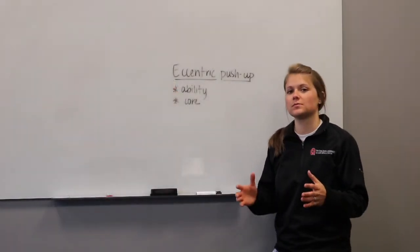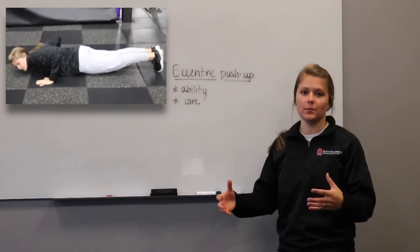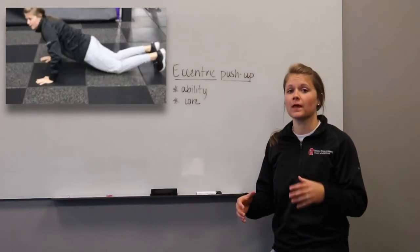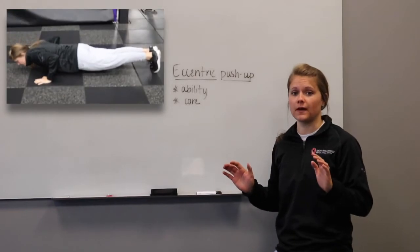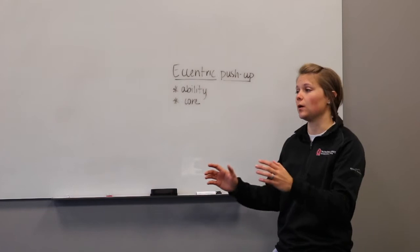With the eccentric push-up, we talked about two different ways to do it. One where you just lower yourself and then get back up to the top however you can. And the second where you lower yourself down with that eight second count and then push back up to the top just like a normal push-up.